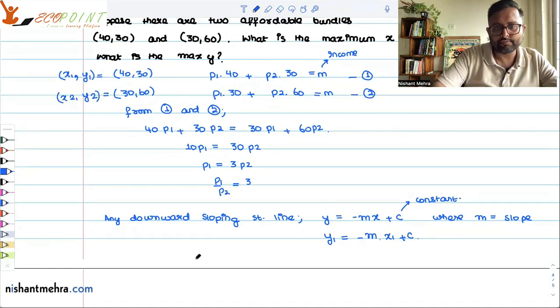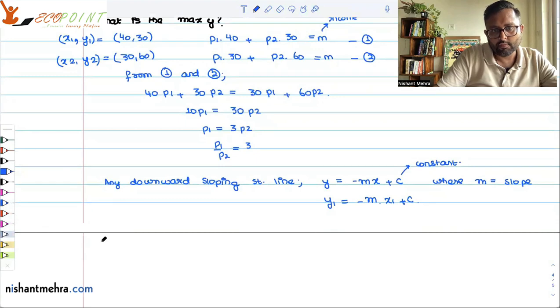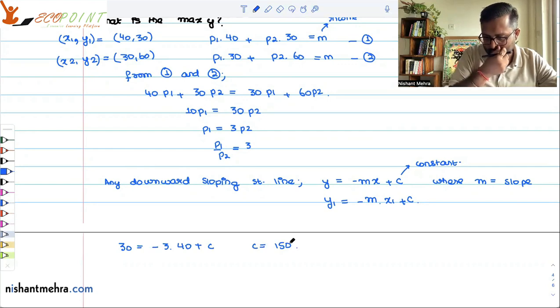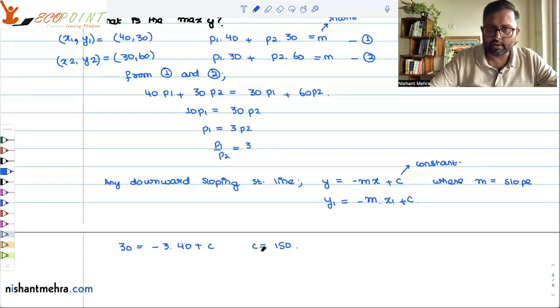Y1 is 30 equals minus m, which is minus 3, times x1, which is 40, plus c. So c comes out to be 150.